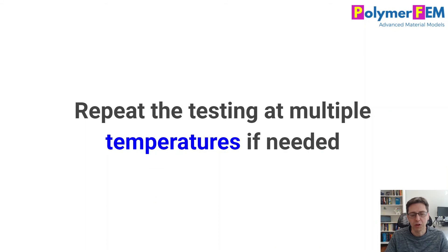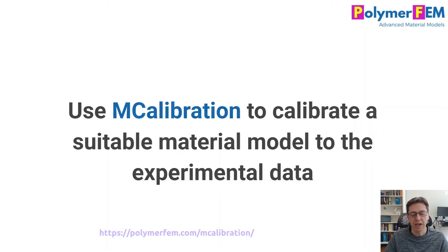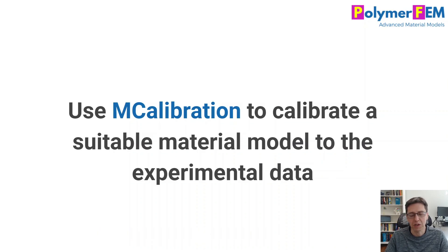If you're interested in multiple temperatures, repeat this test plan at the different temperatures of interest — maybe three temperatures or more, depending on how much is happening in that temperature range. Once you've done all of that, you switch over to mCalibration and can quickly calibrate any material model you're interested in — a plasticity model or one of the viscoplastic material models. If you have any questions or comments, you can ask them below.